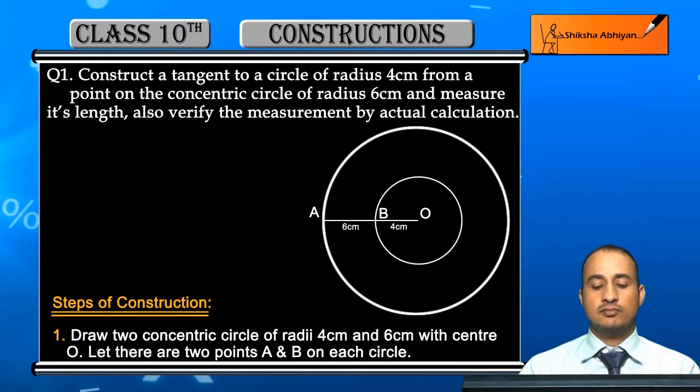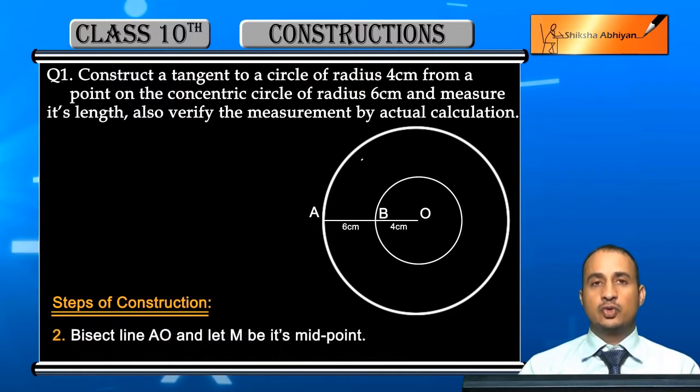Let there are two points A and B on each circle. Each circle par yeh A aur B point hai aur yeh join kara diya aapne line AD, EO. Yeh BO 4 cm aur AO 6 cm. Now student, bisect line AO.